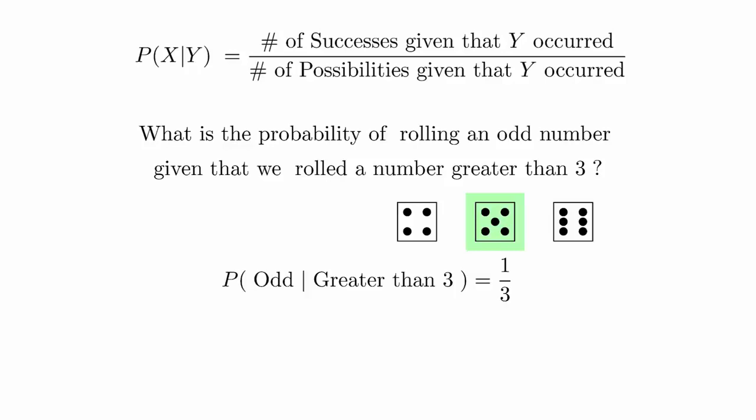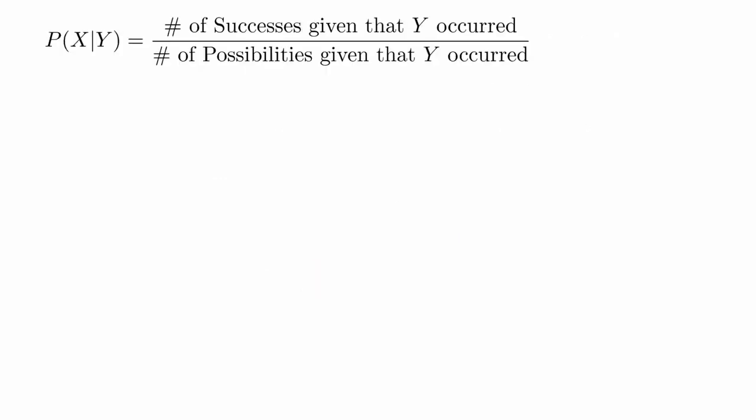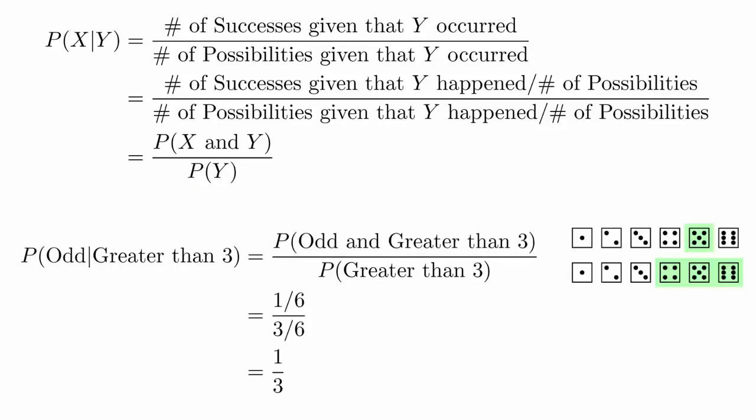Here is the notation that we use. The event to the left of the vertical line defines success, and the event to the right of the vertical line is the condition that is placed on the sample space. There's another way to look at this formula. We can turn both the numerator and the denominator into probabilities by dividing both by the total number of possibilities. The numerator becomes the probability of both event X and Y happening, and the denominator becomes the probability of Y happening by itself. We can do this problem again with the new formula and we see that we get the exact same result.